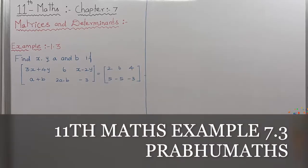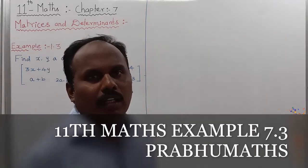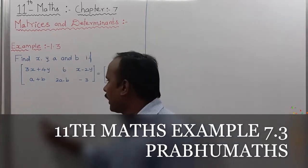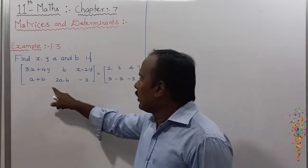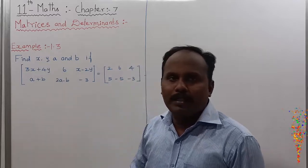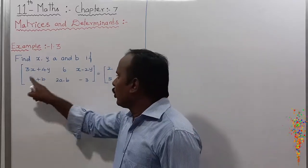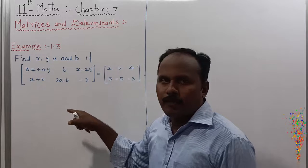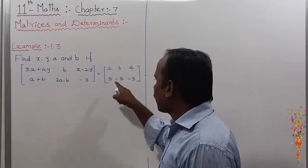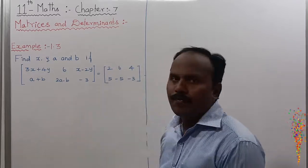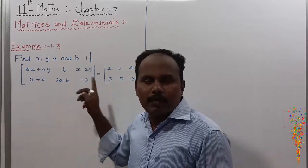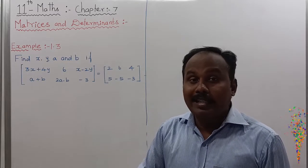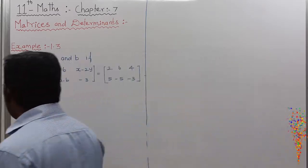Example 1.3: Find the value of X, Y, A, and B. The given matrix — on the left side is one matrix, on the right side is one matrix. The order of this matrix is 2 by 3, that is 2 rows and 3 columns. This is also a 2 by 3 matrix with 2 rows and 3 columns. So the order of the first matrix and the second matrix are equal, and the corresponding values are also equal.